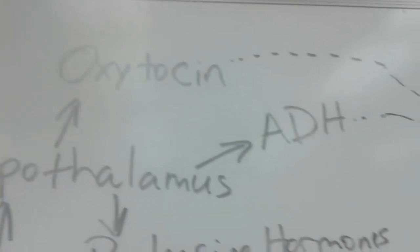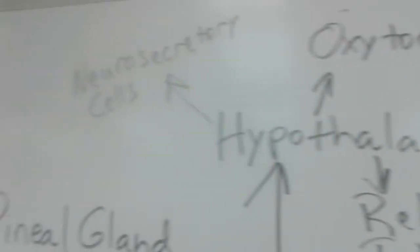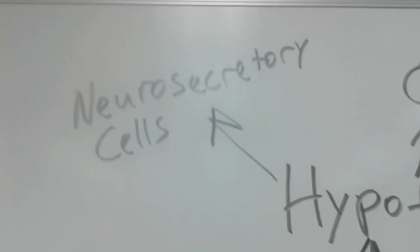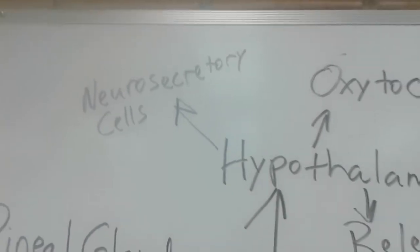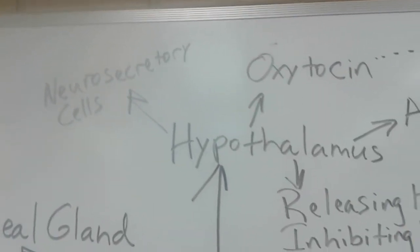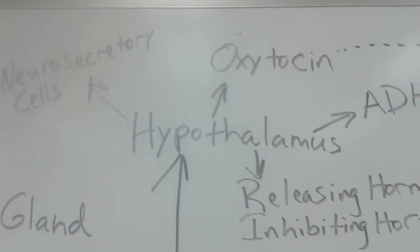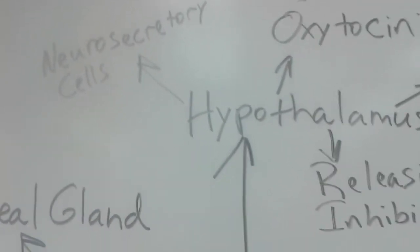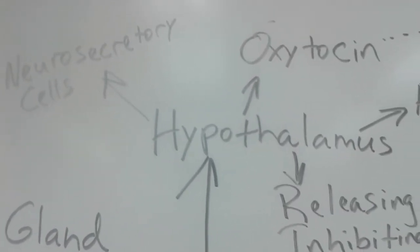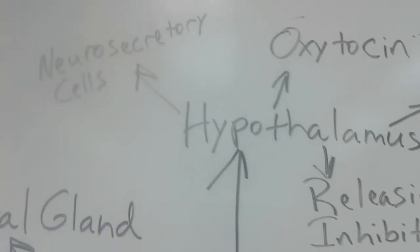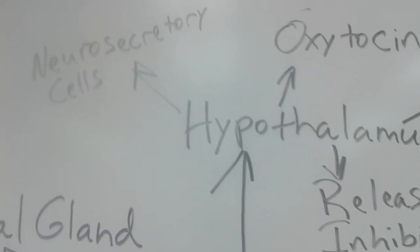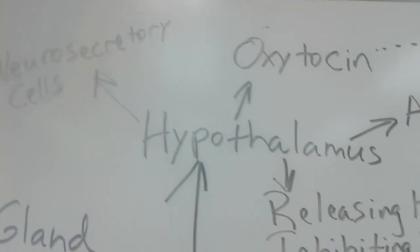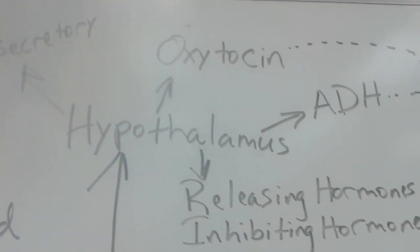You'll notice that have a line written out here about neurosecretory cells. Neurosecretory cells are specialized neurons that actually make hormones and because it's a chemical they can do that. It puts it into vesicles, the vesicles travel down the axon all the way to synaptic knob and then it releases those chemicals at the synaptic cleft.